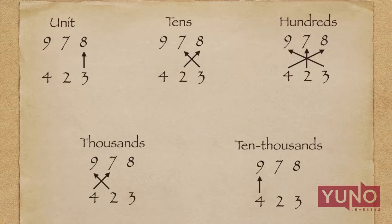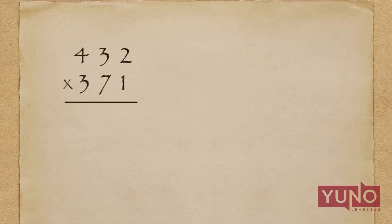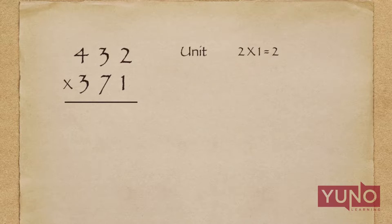Let's quickly move to our first example. Suppose I have to multiply 432 by 371. In the first step, I will multiply the unit places — that is 2 × 1 = 2 — and I will write 2 in the answer. In the next step, I will perform the cross multiplication of the last two digits.